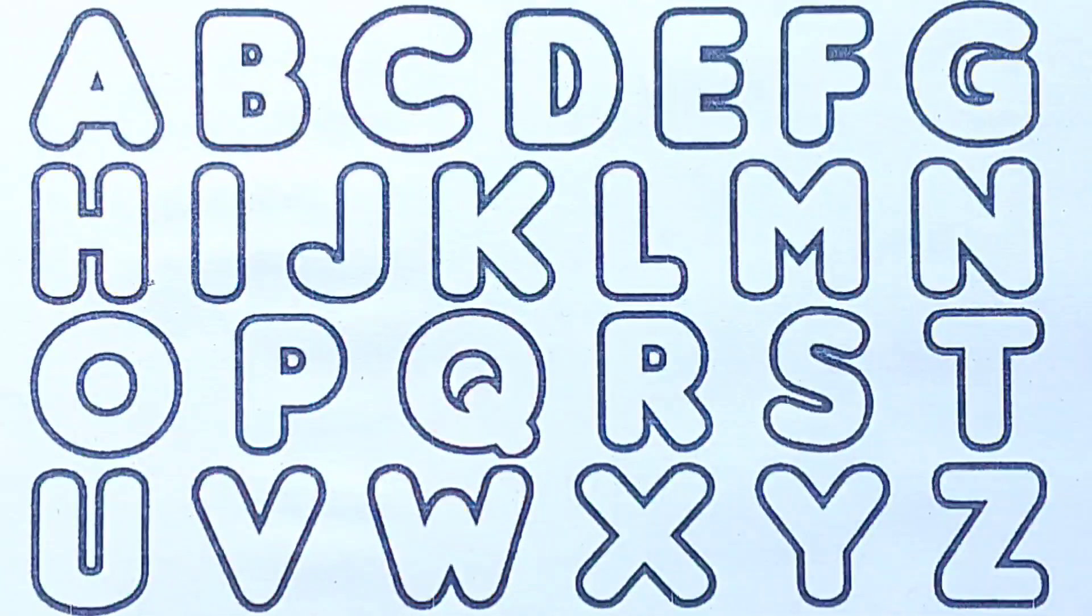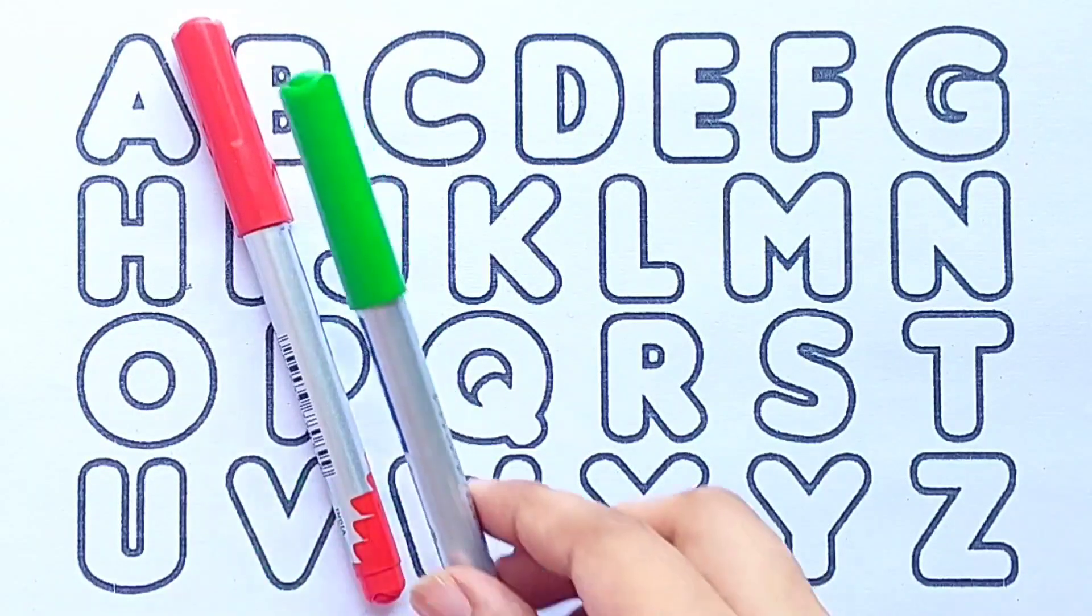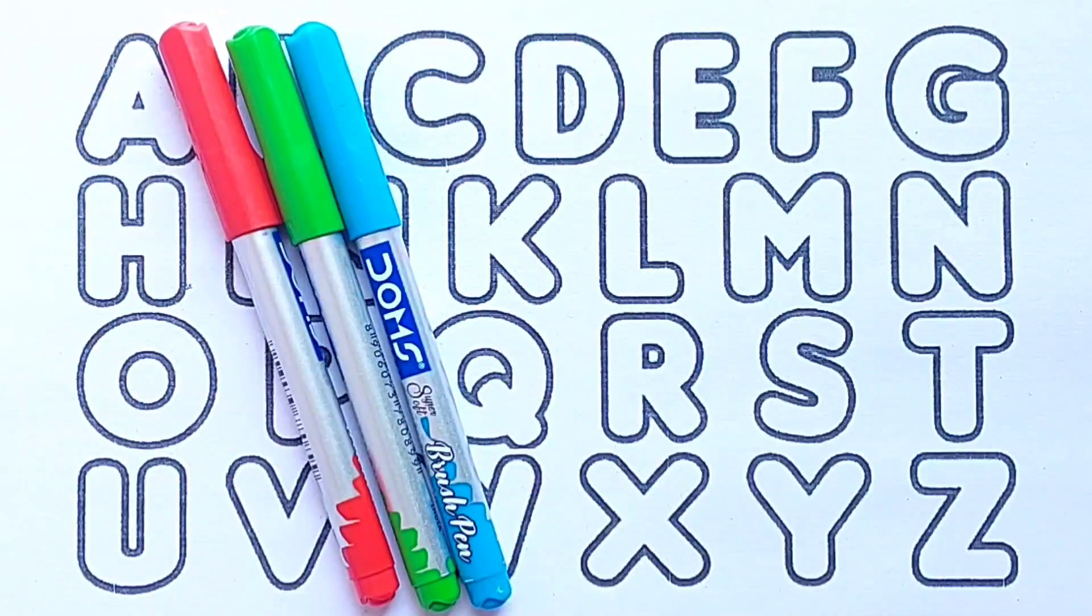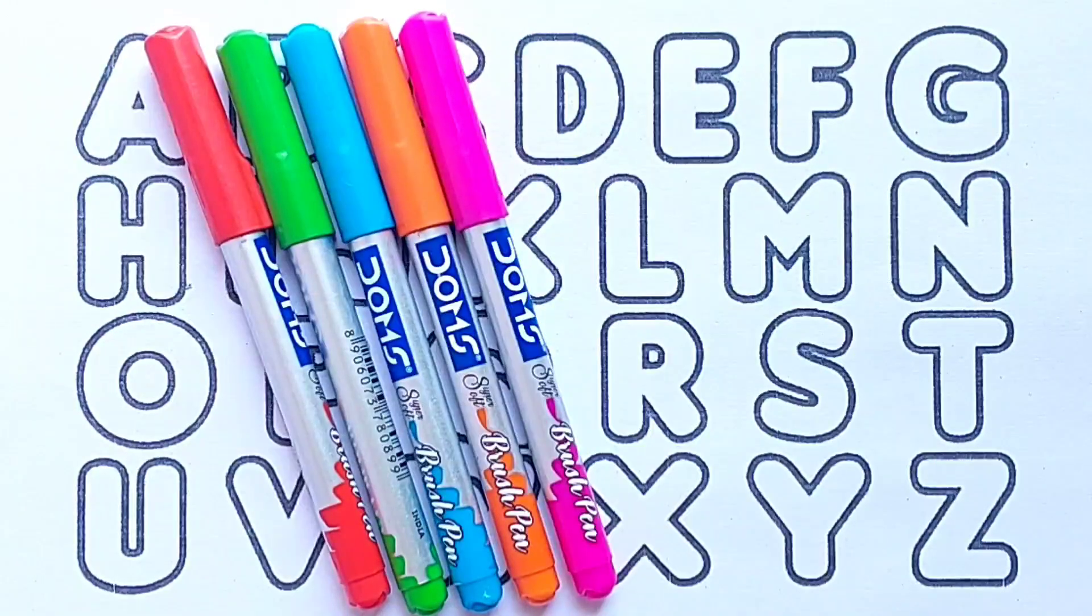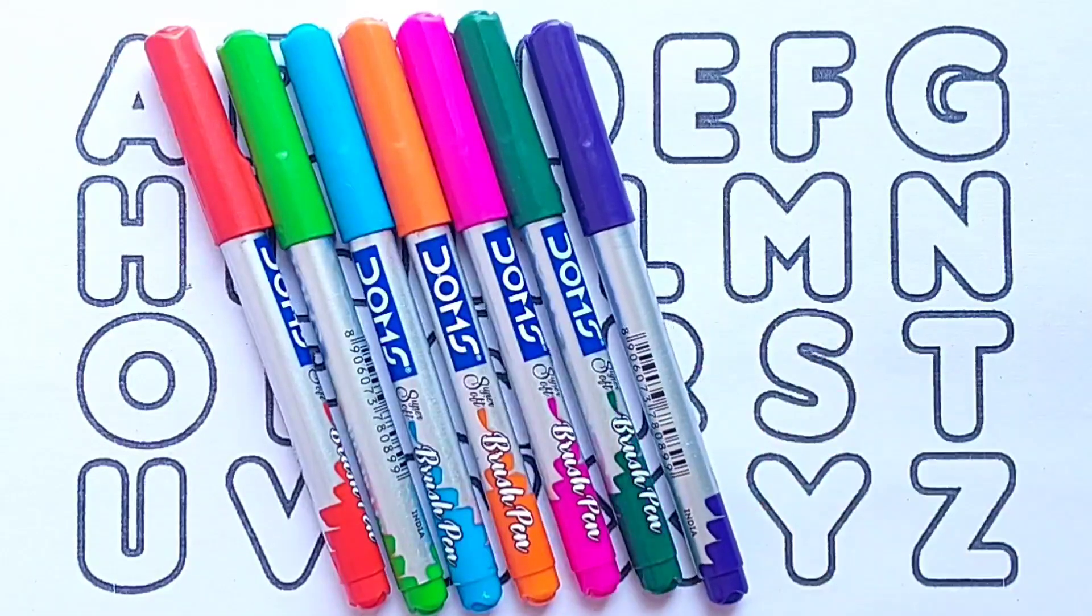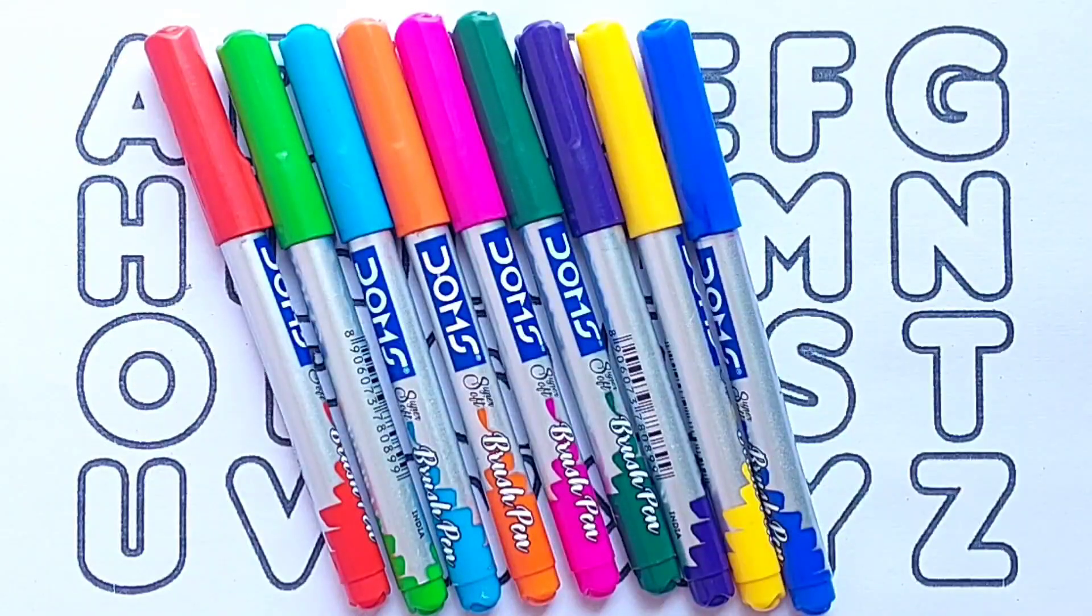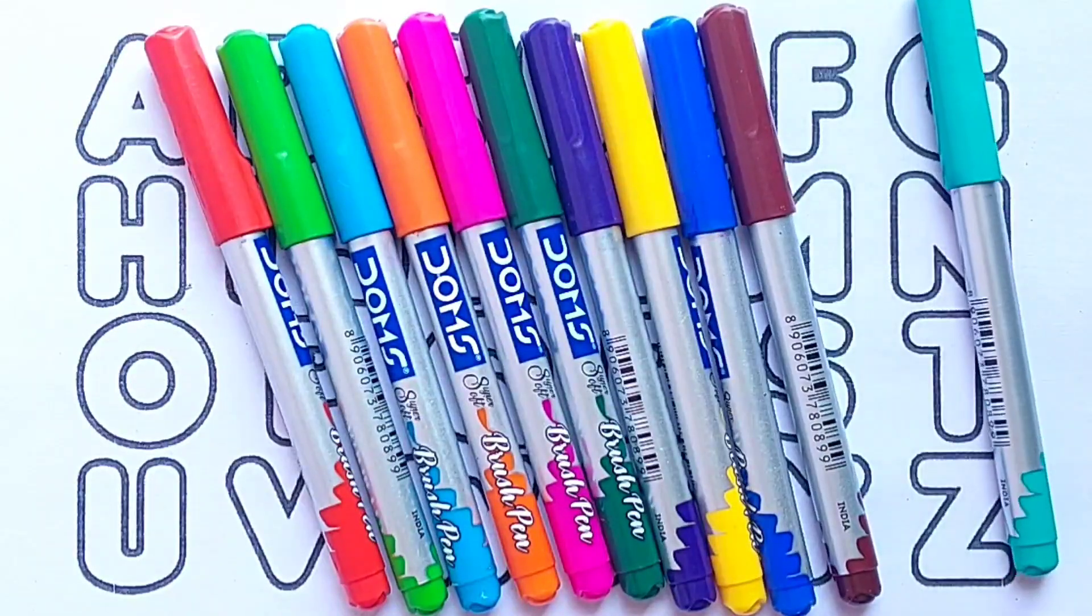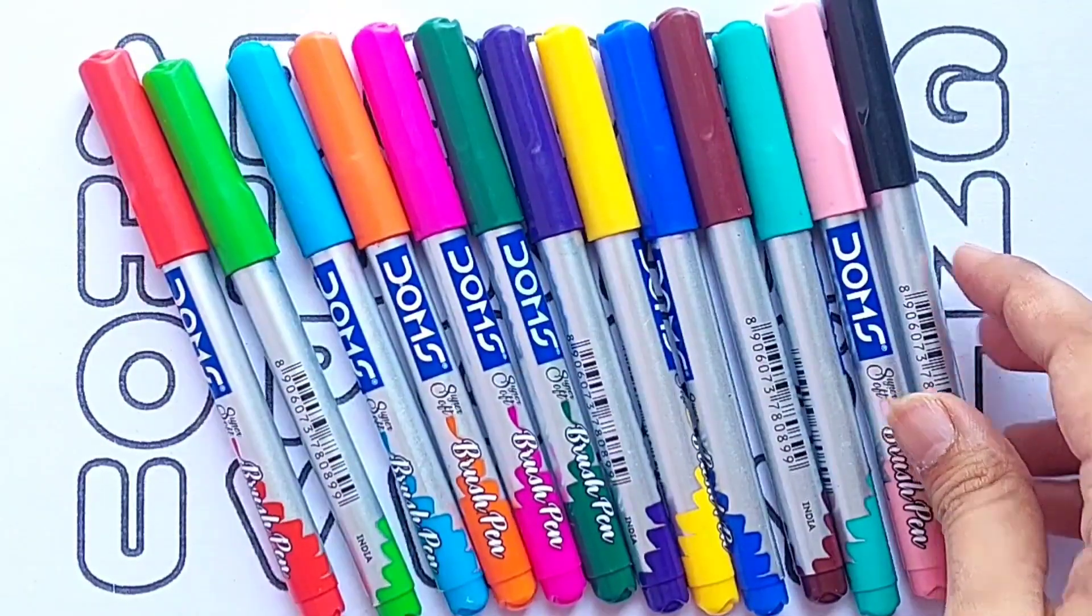Hello kids, let's learn ABC and colors. Name red color, light green color, sky blue color, orange color, pink color, green color, purple color, yellow color, blue color, brown color, sea green color, light pink color, black color.